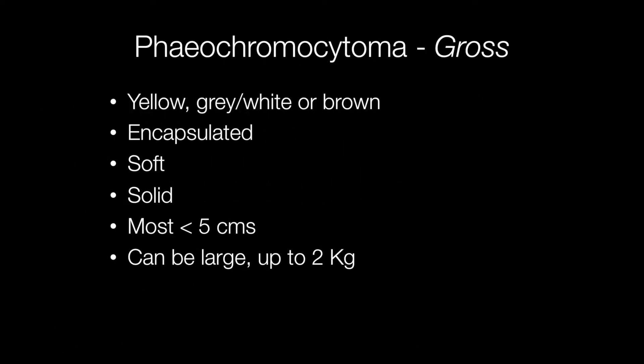Grossly, pheochromocytomas tend to be less than 5cm in diameter, although some may be quite large, even up to 2kg in weight. The cut surface is typically yellow, grey, white, or a reddish-brown. The tumour is encapsulated and well circumscribed, and the tumours are also soft and solid.